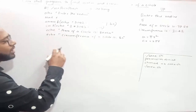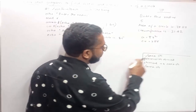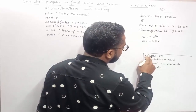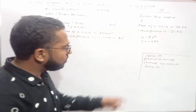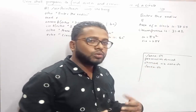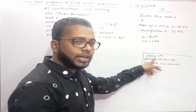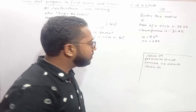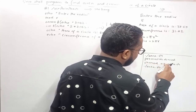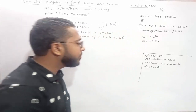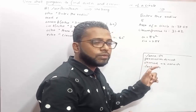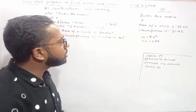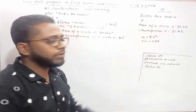Once you've written the program, execute it using ./area.sh. You may get a permission denied message, which means you haven't added executable permission to the file. Use the command chmod +x area.sh to add executable permission, then run ./area.sh again. It will ask you to enter the radius, and then the area and circumference of the circle will be calculated and printed.